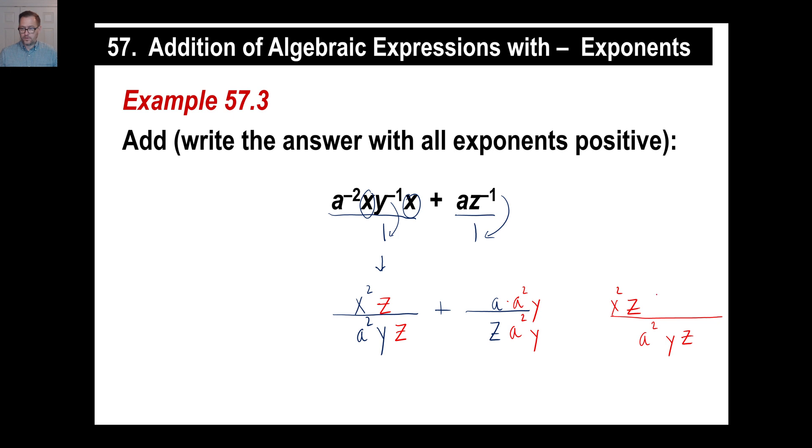And then we have plus A¹ times A², which is A³. That's supposed to be a plus there. That's a horrible plus. Anyway, there's my Y.